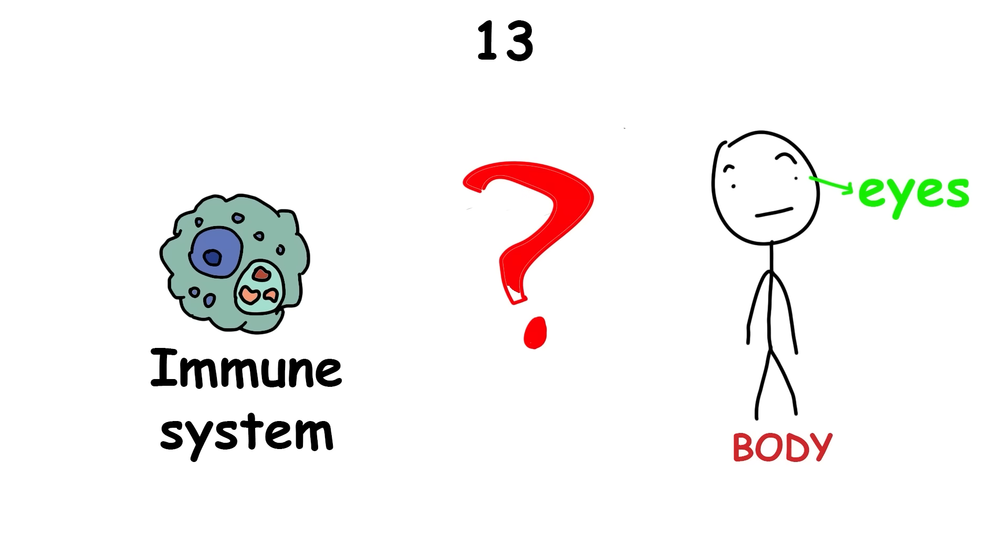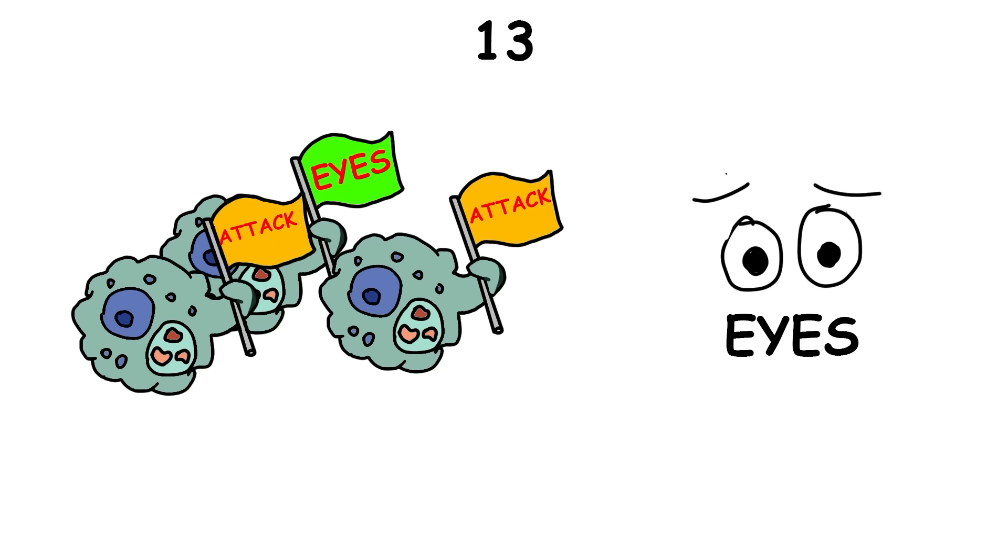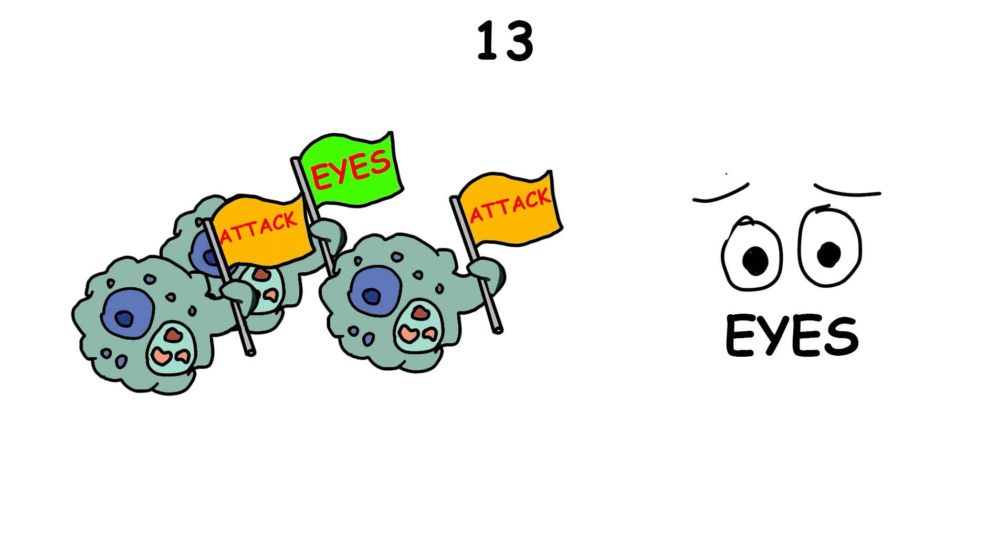Our immune system doesn't recognize our eyes as part of our bodies, and if it somehow starts to know that your eyes are there, they'll begin attacking them thinking that they're foreign objects.